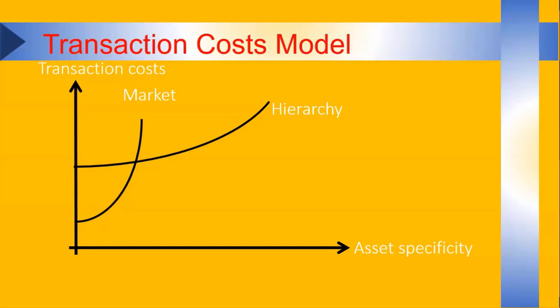But there's two further conclusions here. First, the hierarchy curve starts above the market curve. So at zero complexity for very simple transactions, for transactions that require hardly any specific investment, a firm transaction will always be more expensive than a market transaction. So that's the first prediction that comes from the model. Simple things you don't do yourself, but you'd rather buy them in a market. The second thing that you see is that the curves are both upward sloping, but the hierarchy curve has a slope that is lower than that of the market curve. So as asset specificity increases, both forms of coordination get more expensive, but this goes much quicker for the market than for the hierarchy.